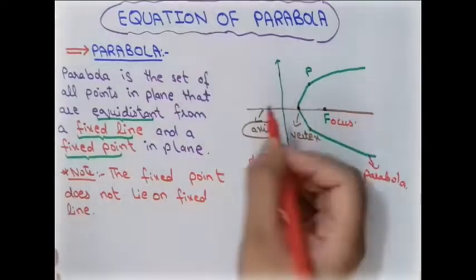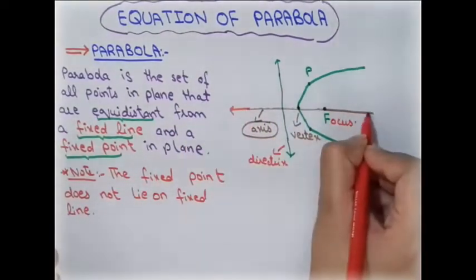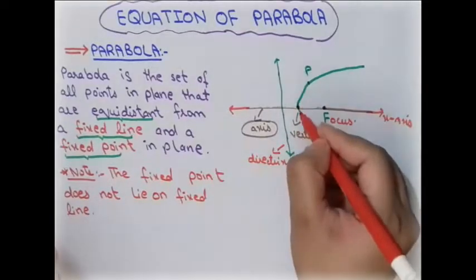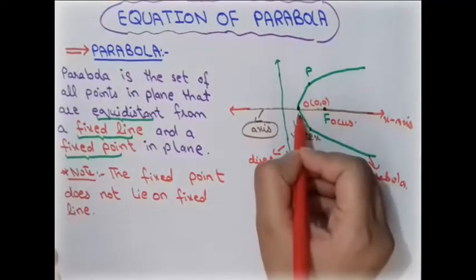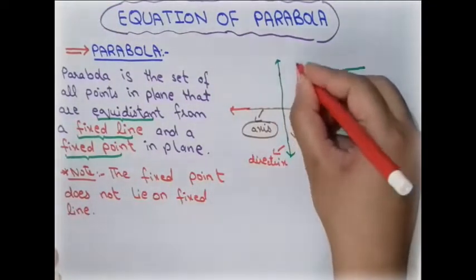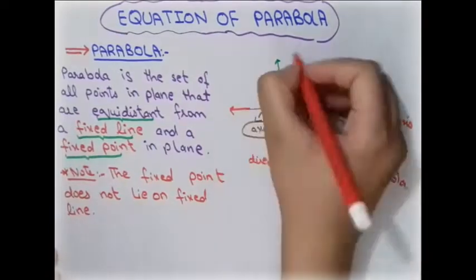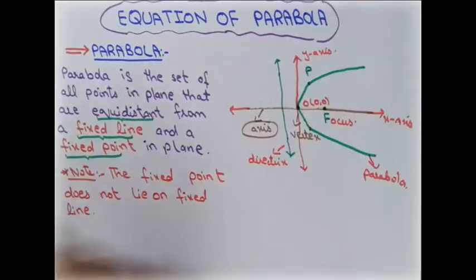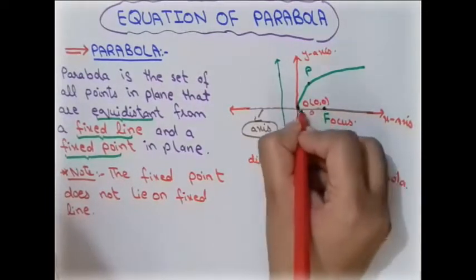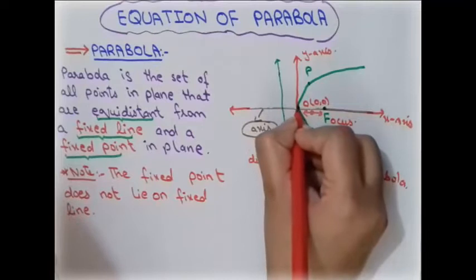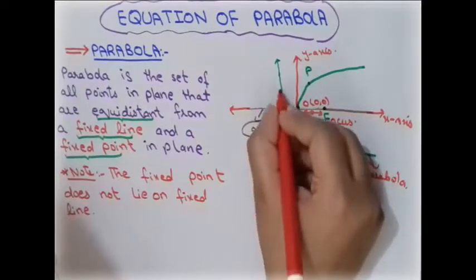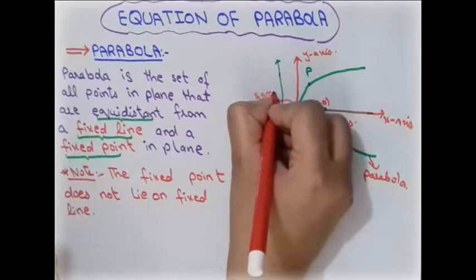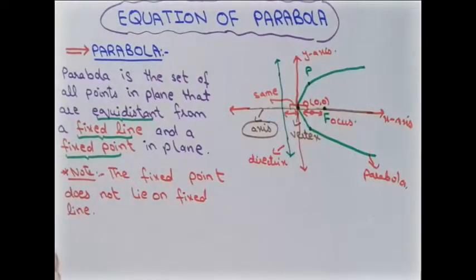We set the axis of the parabola as the X-axis and take the origin at the vertex. The Y-axis is drawn accordingly. The distance between the vertex and the focus equals the distance between the vertex and the directrix line — we will use this information to find the equation of the parabola.